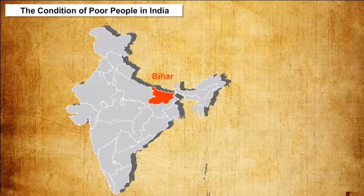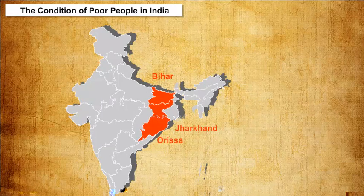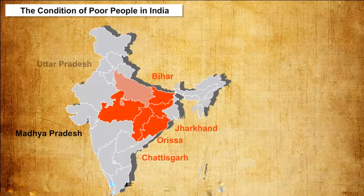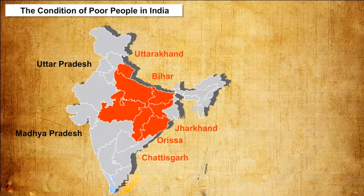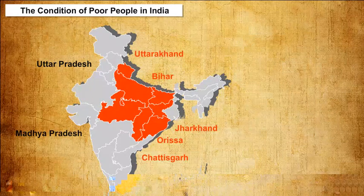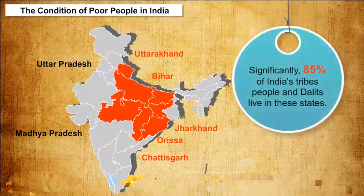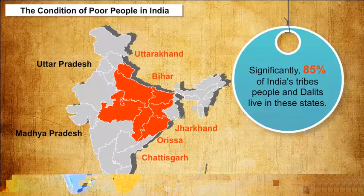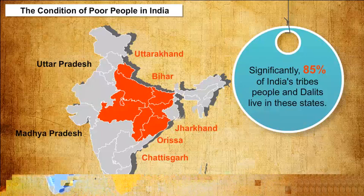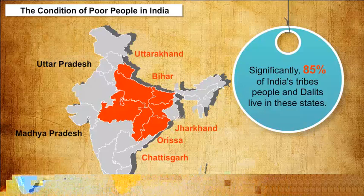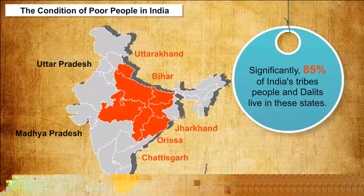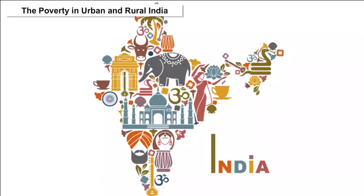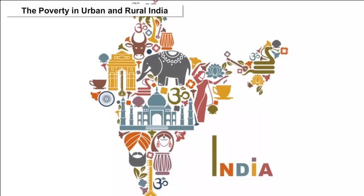Almost 60% of the poor continue to reside in Bihar, Jharkhand, Odisha, Madhya Pradesh, Chhattisgarh, Uttar Pradesh, and Uttarakhand. Significantly, 85% of India's tribal people and Dalits live in these states.